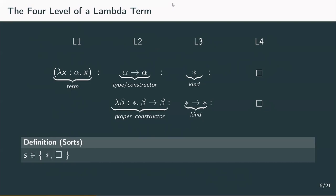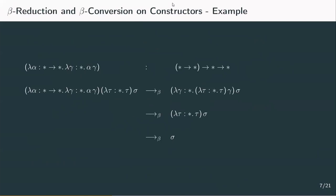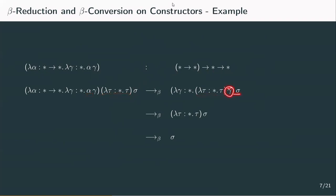Now that we have a new kind of abstraction and application, we also need beta reduction and conversion. These notions are very intuitive and work just like they did for lambda terms, so we'll go straight to an example. This term is a type depending on a type: lambda alpha of kind star to star, lambda gamma of kind star dot alpha applied to gamma. It has a proper constructor alpha that takes a type and returns a type, and a constant constructor gamma. So this constructor has kind star to star to star. Applying a proper and a constant constructor, we substitute alpha by lambda tau dot tau and gamma by sigma, and reduce further to just sigma.